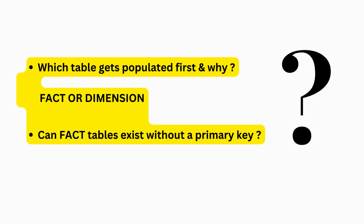I'm leaving some questions for you to think about and answer: Which table gets populated first, and why? Can fact tables exist without a primary key?